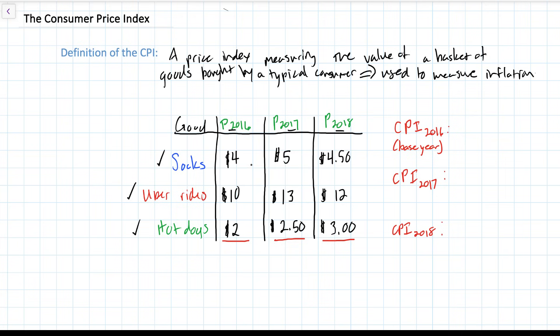What we're going to do is add up the prices in each of these years to come up with our price for the basket of goods over three years, and then we're going to calculate the CPIs for each of the years using 2016 as our base year. First, let's add up the total values of the basket of goods consumed by the typical consumer in each of the three years.